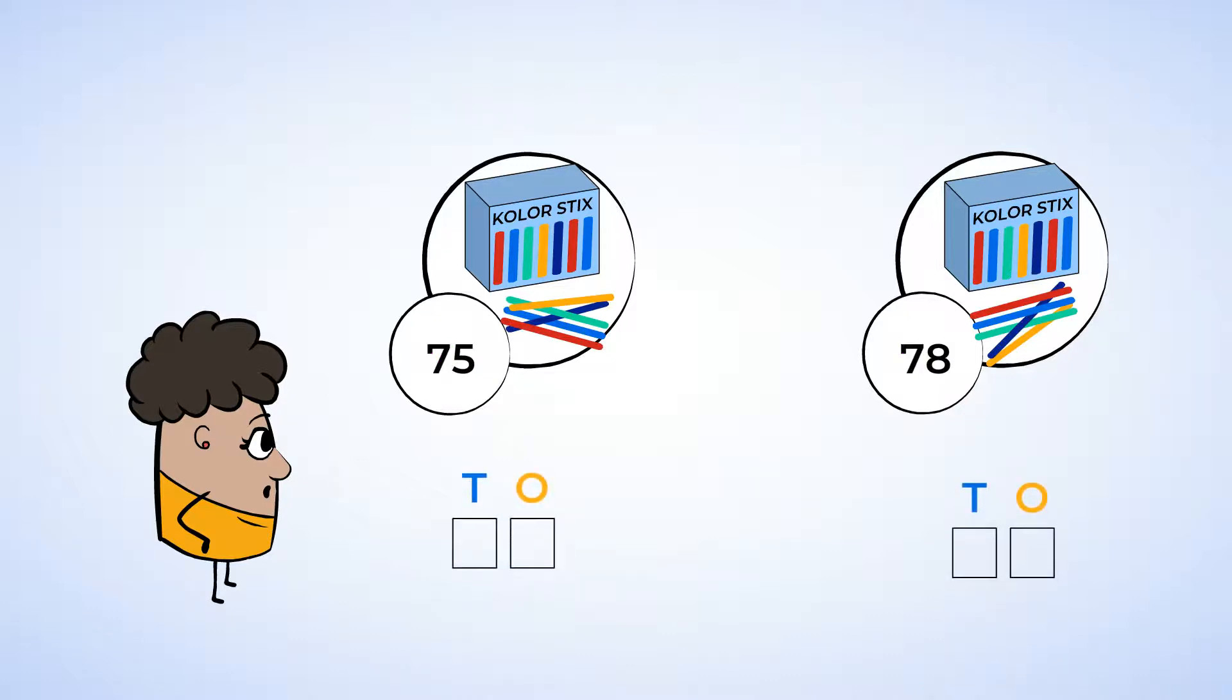Well, we can use a place value chart to help us. Let's put the numbers 75 and 78 in a place value chart. Just like when you read a book, go from left to right. First, compare the tens. The number 75 has 7 tens, and the number 78 also has 7 tens. Because 7 tens is equal to 7 tens, the tens can't help us figure out which number is bigger. So we're going to need to compare the ones.